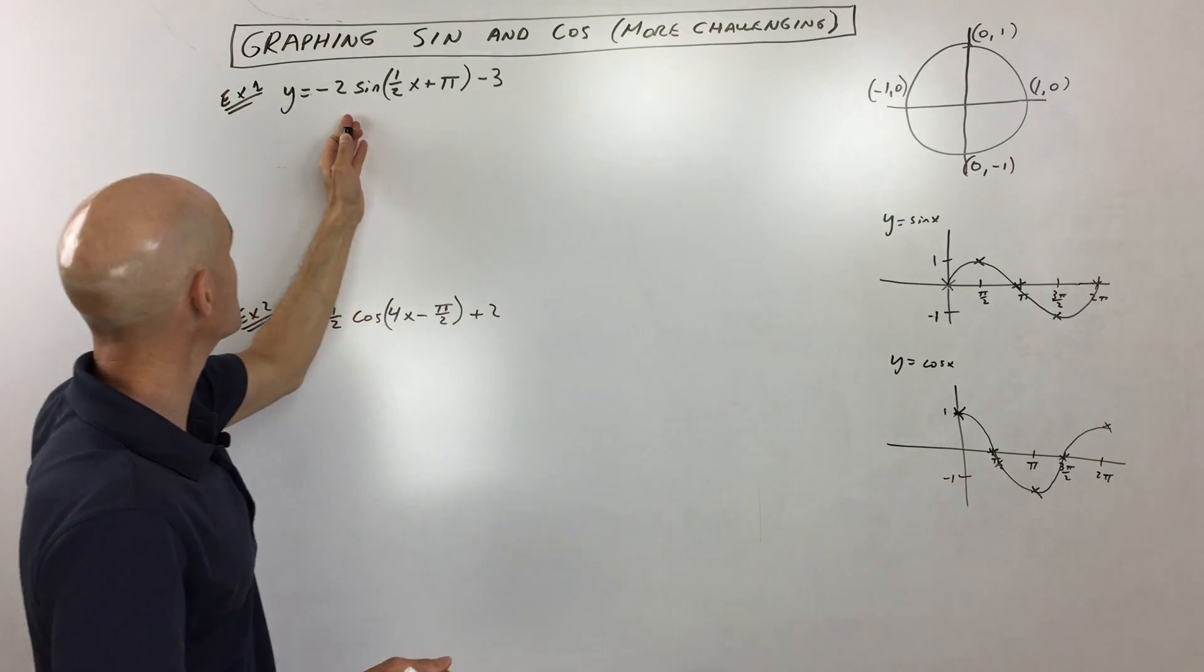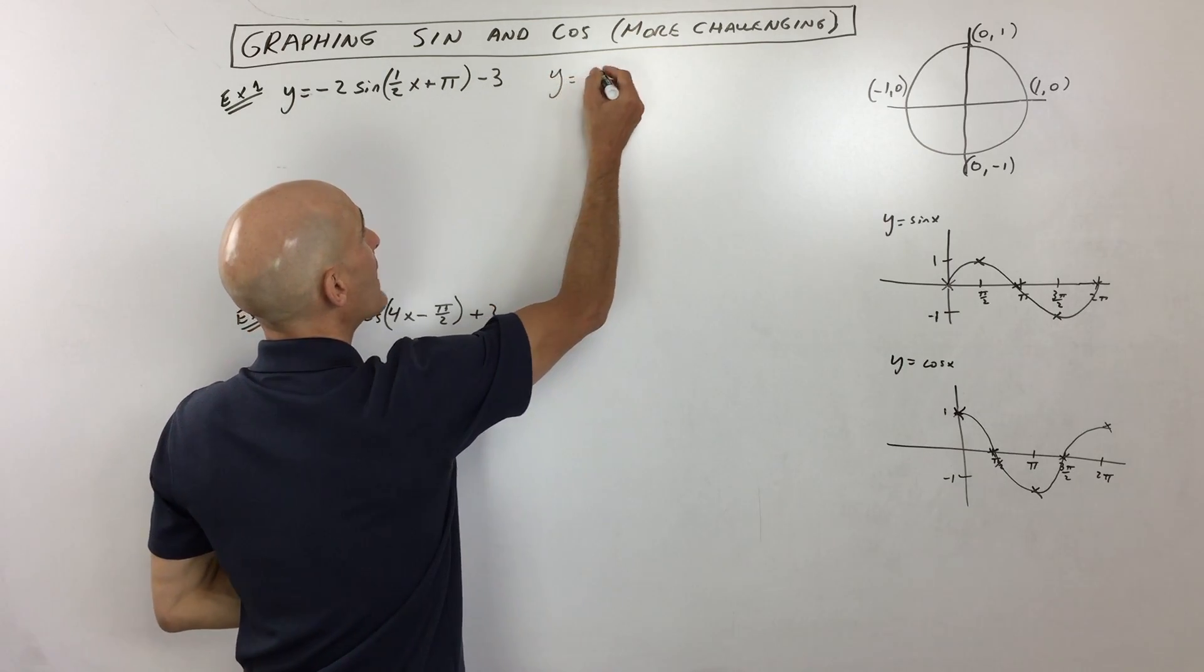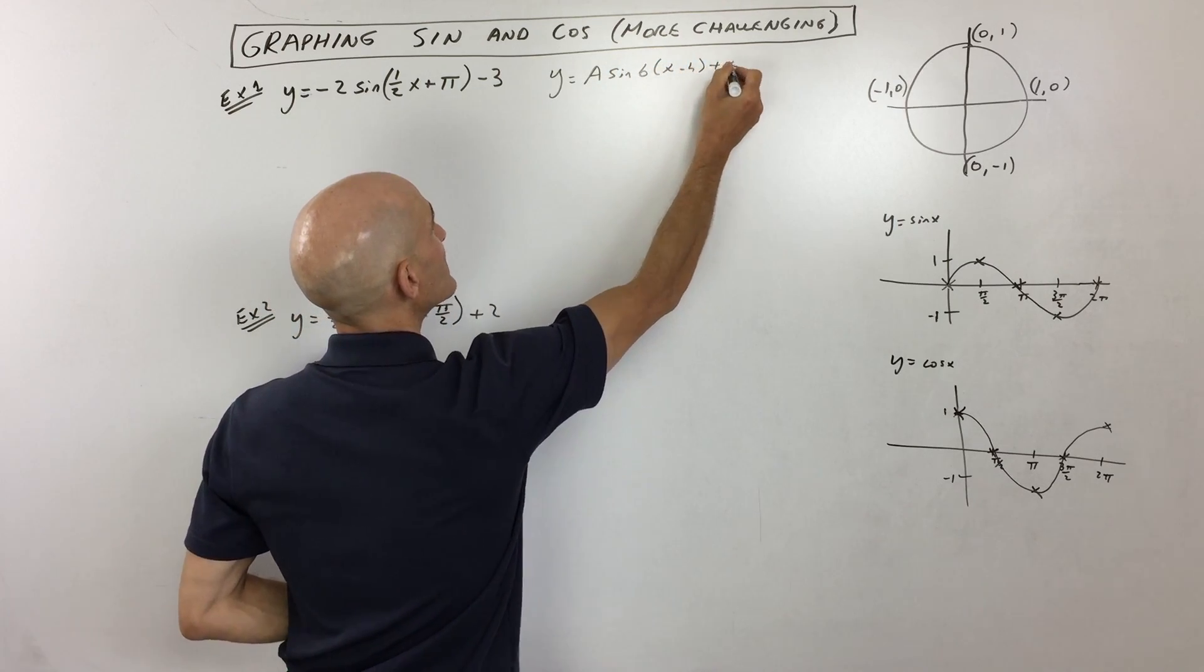So let's get into these more challenging examples now. Example one, you can see that this is in this form, y equals a sine b(x minus h) plus k.